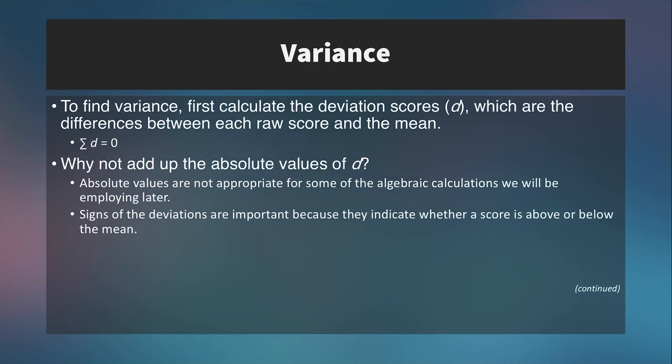So first to find variance, we have to calculate what are called deviation scores. And these are just the differences between each raw score and the mean. So if we take the sum of all deviations, this would be equal to zero because the mean is in the middle of the data. So every score on this side will have an analogous score on this side that will eventually average out if we add up all of those deviations to get zero.